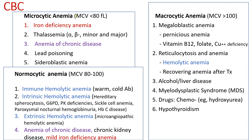When the MCV is less than 80 femtoliters, it's called microcytic anemia, which encompasses iron deficiency anemia, thalassemia, anemia of chronic disease, anemia from lead poisoning, and sideroblastic anemia.